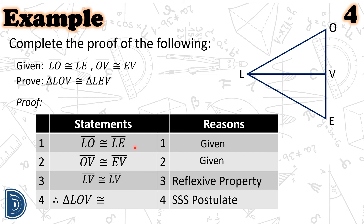We now have three pairs of corresponding sides of the two triangles. On the left-hand side of the congruence statement are the sides of triangle LOV, and on the right-hand side we have the sides of triangle LEV. Therefore, triangle LOV is congruent to triangle LEV by the SSS postulate.